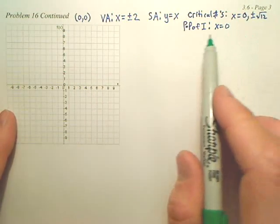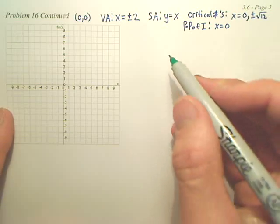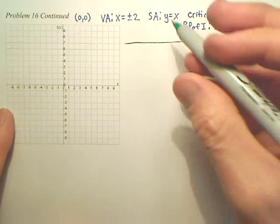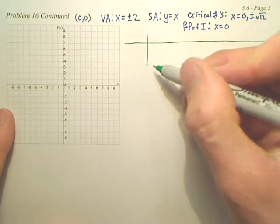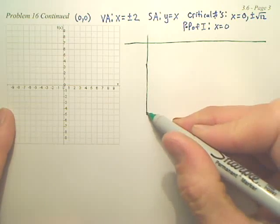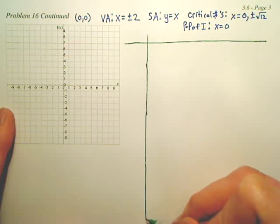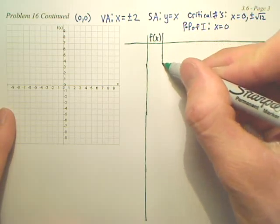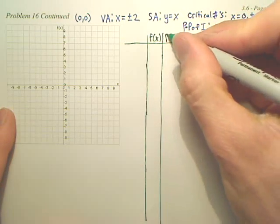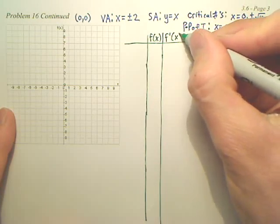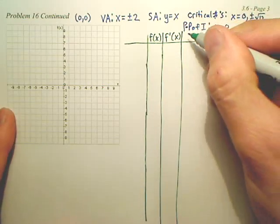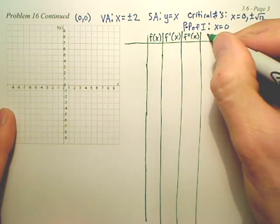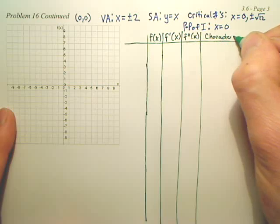We have all this information and we're going to make a huge table. For the table, when you're sketching, the first part is your intervals. Then the second part is going to be f of x. Then you're going to have f prime of x. Then you're going to have f double prime of x. And then you're going to have characteristics.